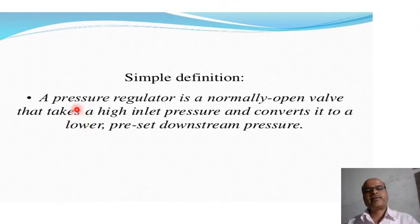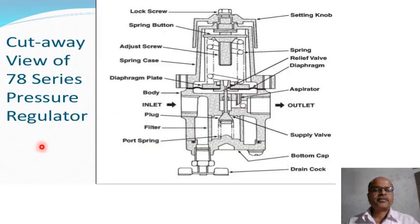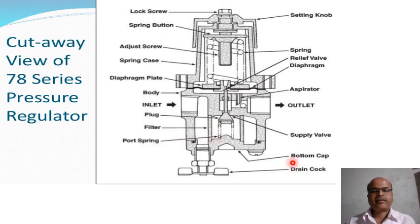A simple definition: a pressure regulator is a normally open valve that takes high inlet pressure and converts it to a lower preset downstream pressure. The cutaway view of the 78 series pressure regulator shows: lock screw, spring button, adjust screw, diaphragm plate, inlet, outlet, supply valve filter, port spring, bottom cap, and drain cock.